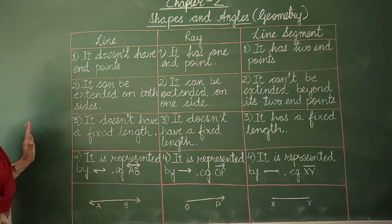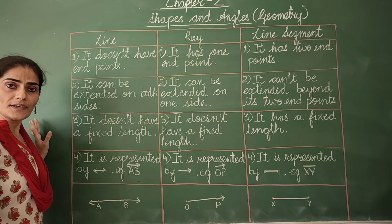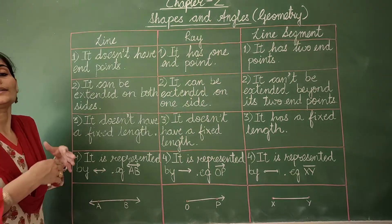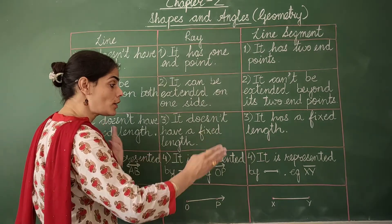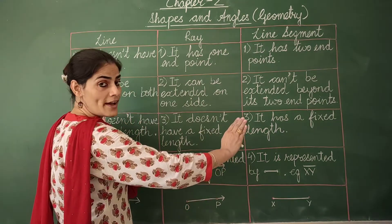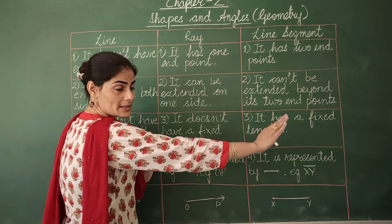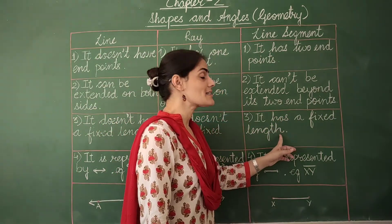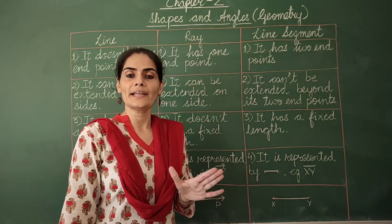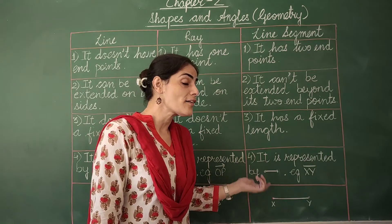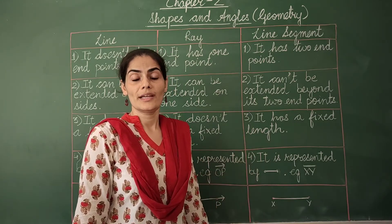A line does not have a fixed length because it has no endpoints and can be extended endlessly. A Ray also does not have a fixed length because we can extend it as much as we want on one side. A line segment has a fixed length. If I ask you to draw a line segment with length 5 cm, you must draw it with exactly 5 cm — it has a fixed length.